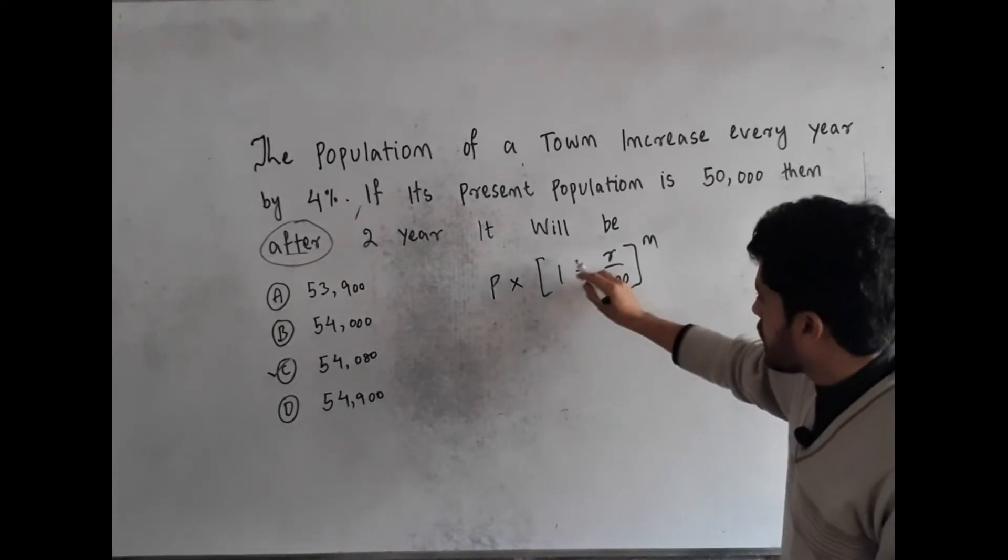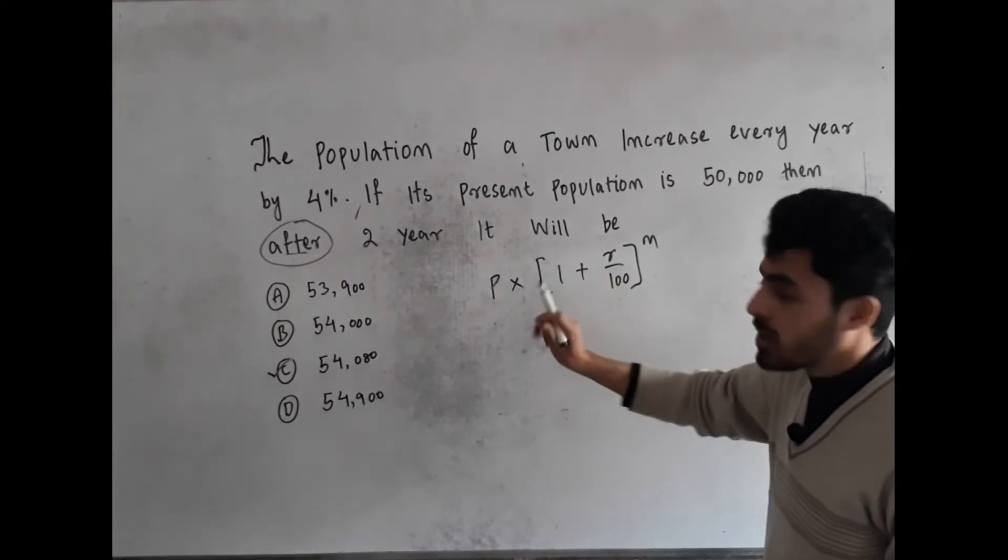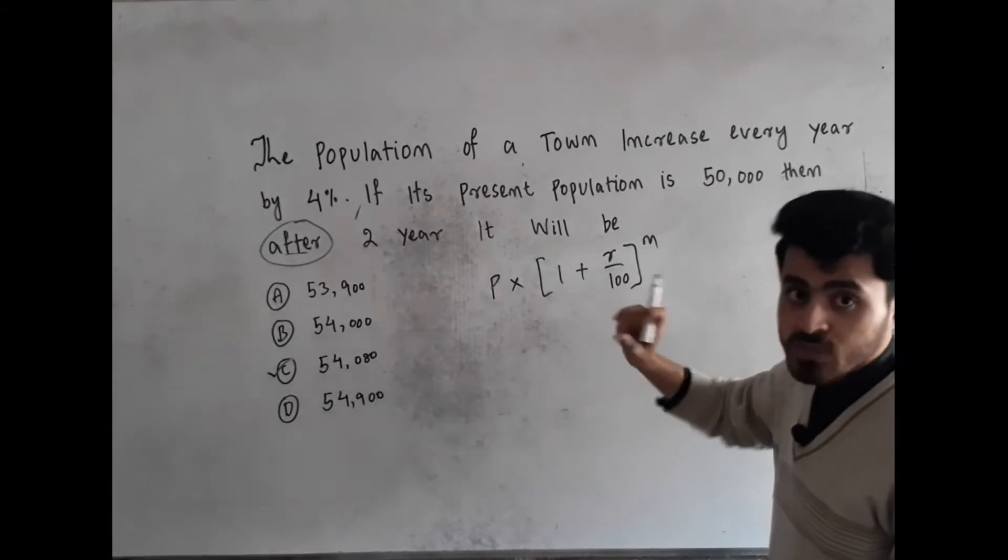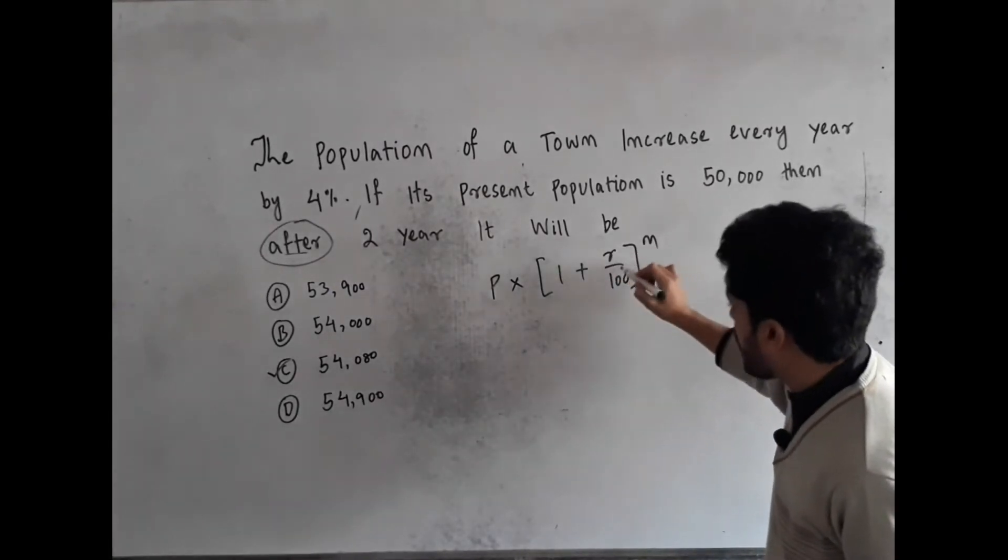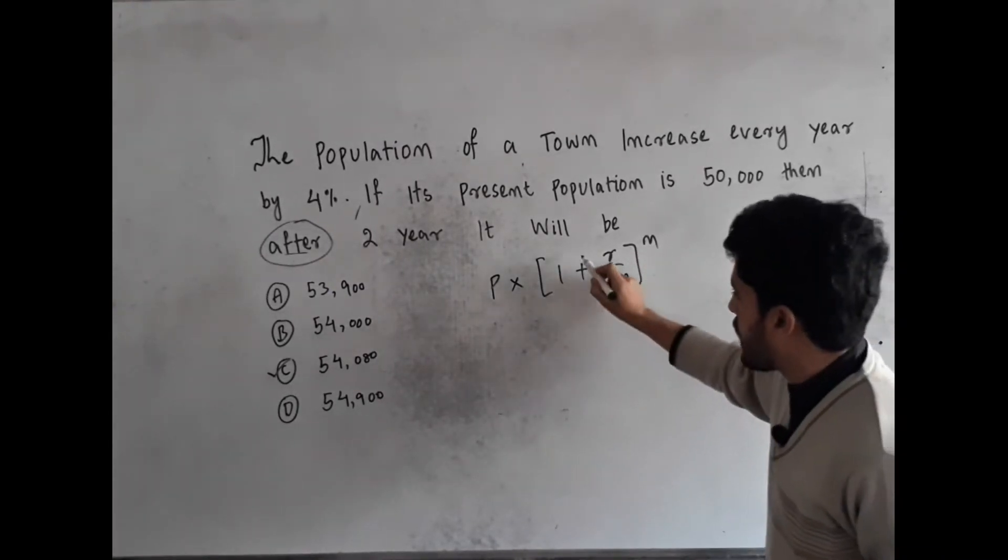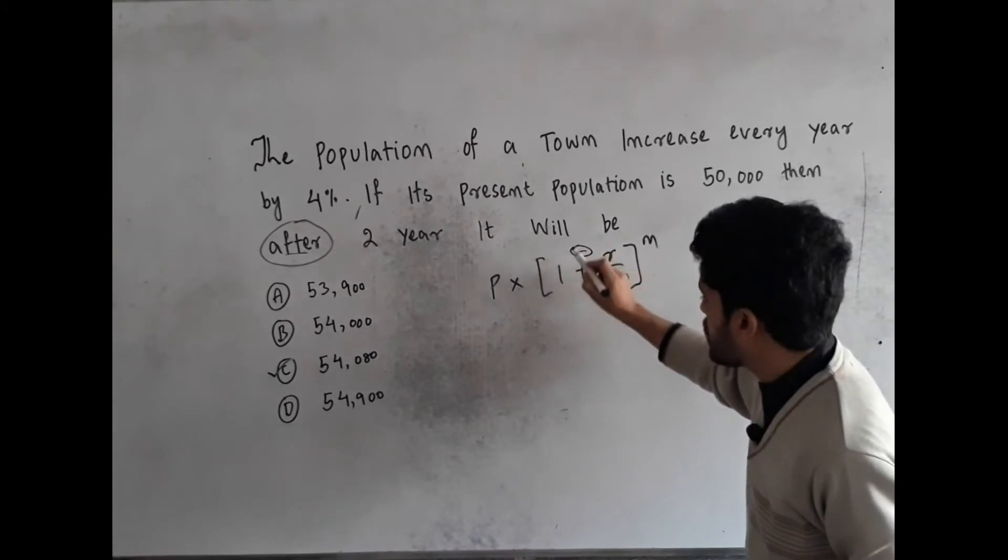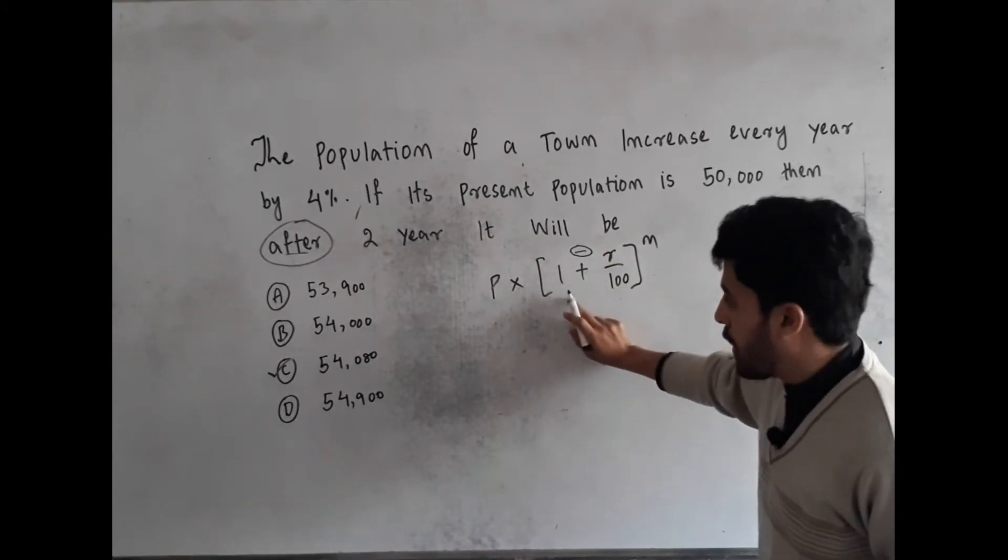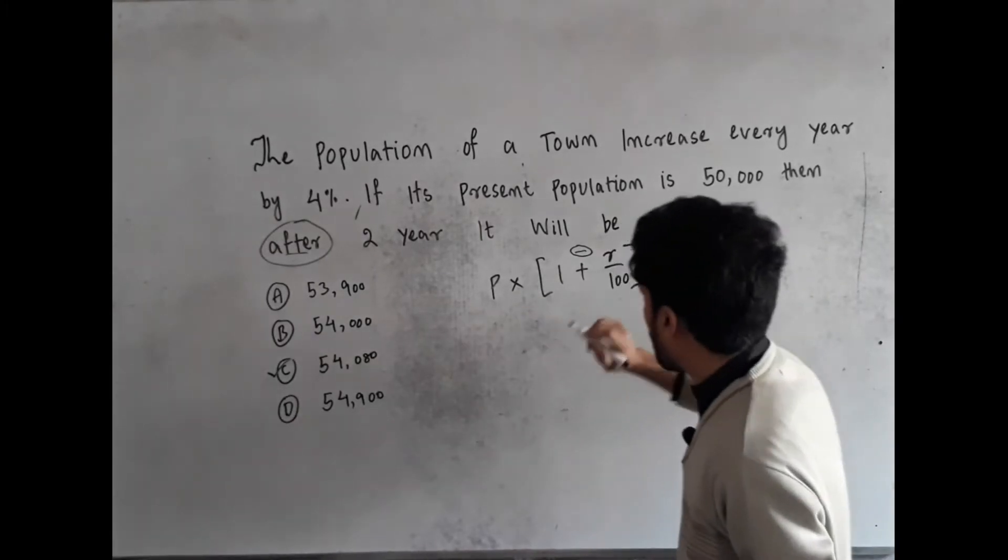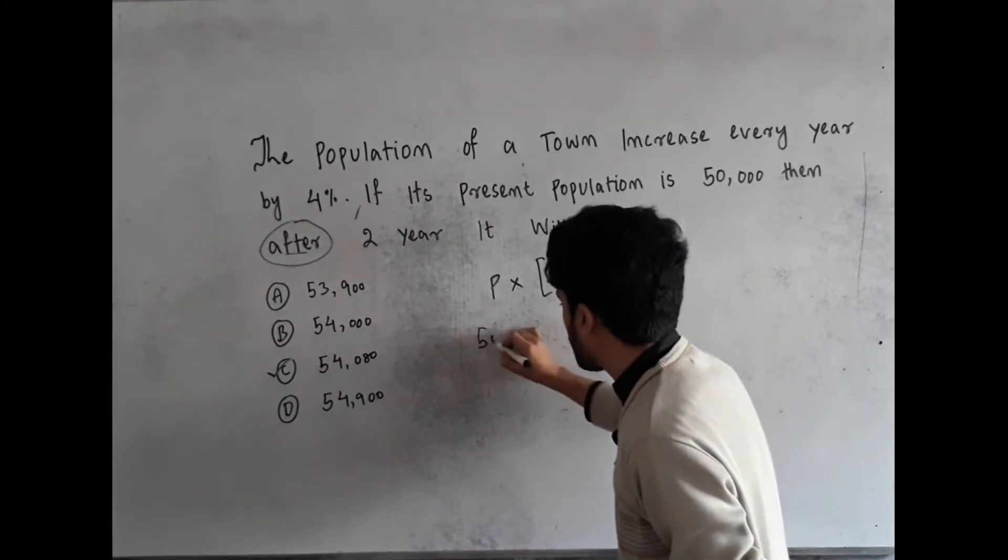you have to add the fraction in 1. In the before situation, you have to subtract the fraction R divided by 100 from this 1. In the before situation, we have to subtract this fraction from 1. So this is the present population which is 50,000.